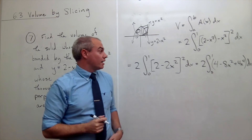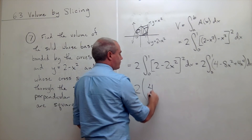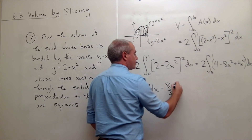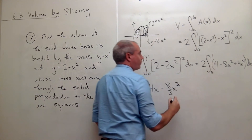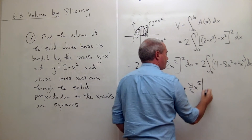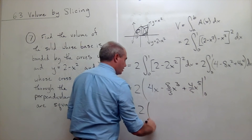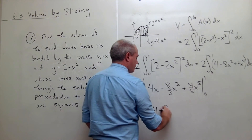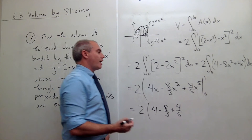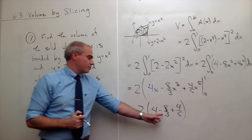Taking the antiderivative: 2 times [4x minus (8/3)x cubed plus (4/5)x to the fifth], evaluated from zero to one. Plugging in one gives 4 minus 8 thirds plus 4 fifths. Plugging in zero gives zero. So the result is 2 times (4 minus 8/3 plus 4/5).